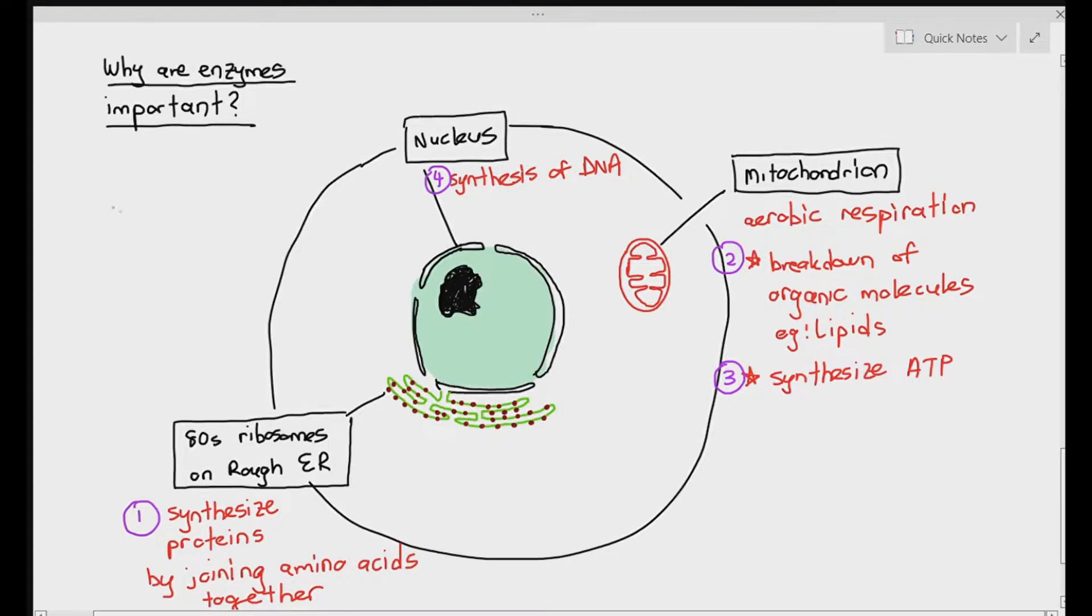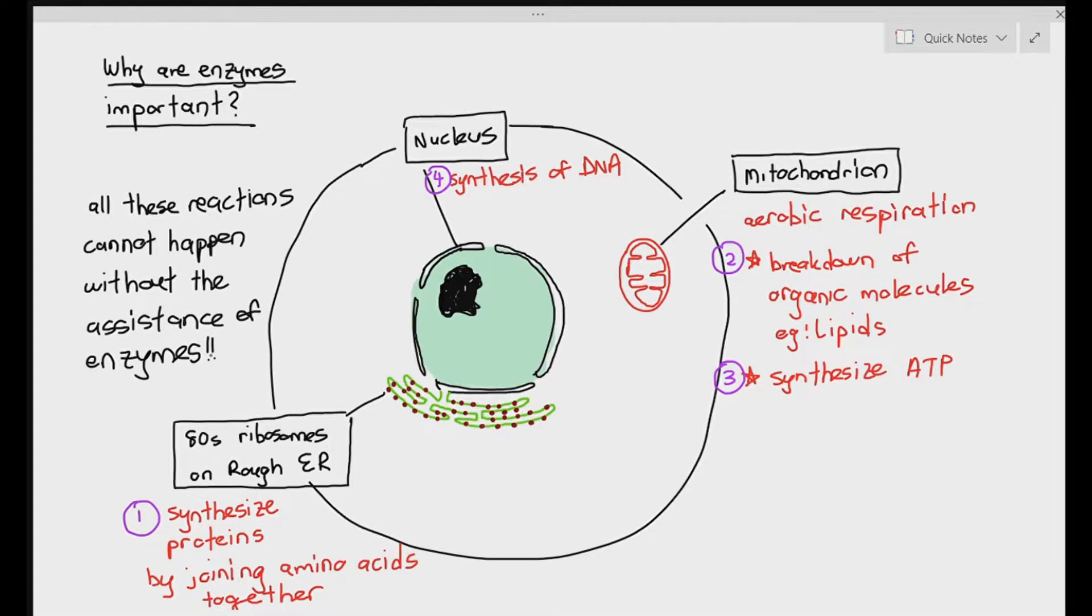I'll explain this in chapter 13 to synthesize a molecule known as ATP, an important energy molecule. And in your nucleus, your nucleus carries out a very important reaction known as the synthesis of DNA. Now, based on the list that I've written here, within just one cell, we have four different types of chemical reaction. Synthesizing protein is one chemical reaction. Breaking down lipid is a chemical reaction. Synthesizing ATP is a chemical reaction. And synthesizing DNA is a different type of chemical reaction.